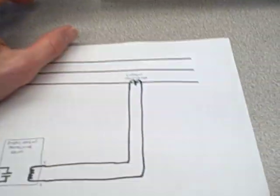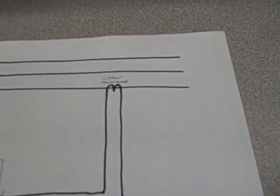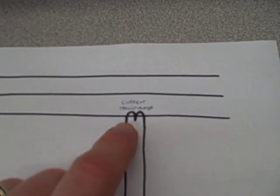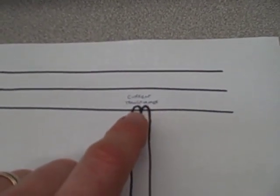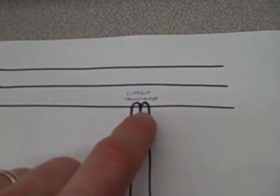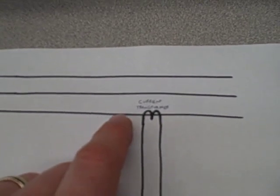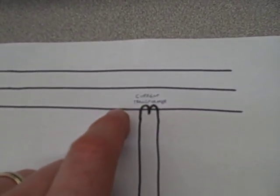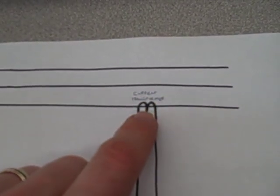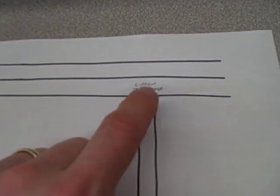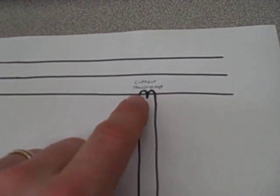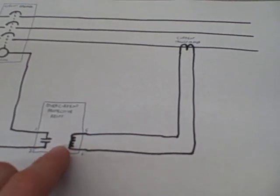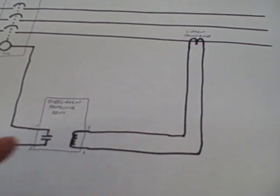So what we have to do is use something called a current transformer. And a current transformer is pretty much what it sounds like. It's an electrical transformer with a secondary winding as a coil. The primary winding is the straight conductor. The magnetic field from that straight conductor induces a current in the secondary winding, which is much less. It's a step down ratio of that current. That current comes down to our relay or a meter or other panel mounted instrument.